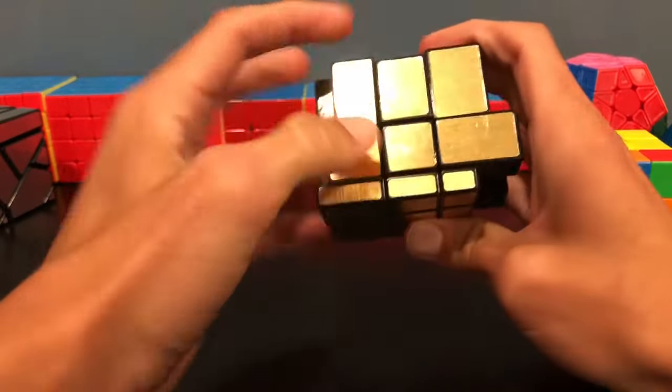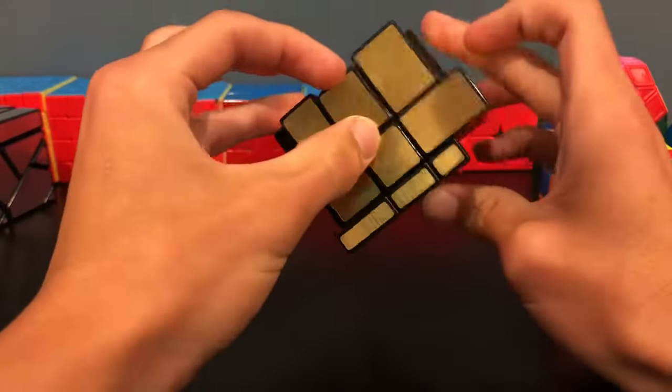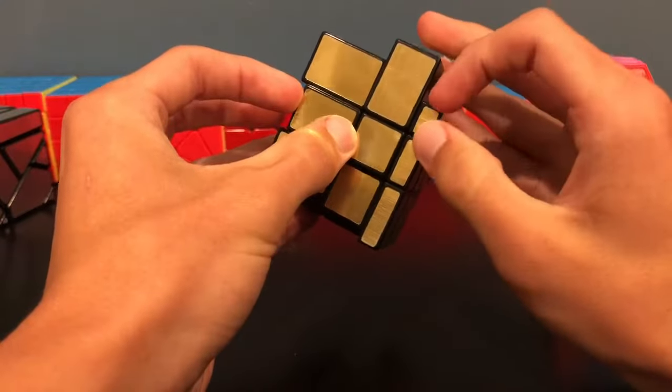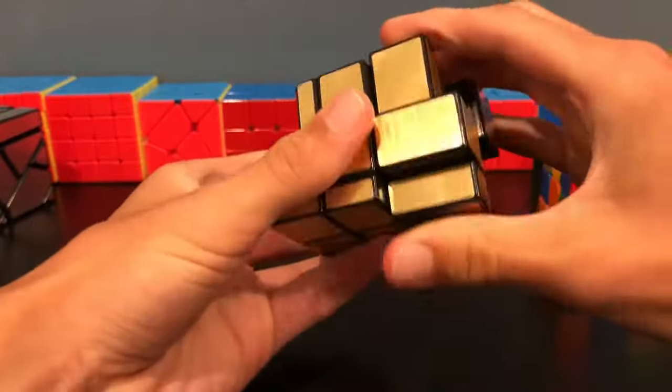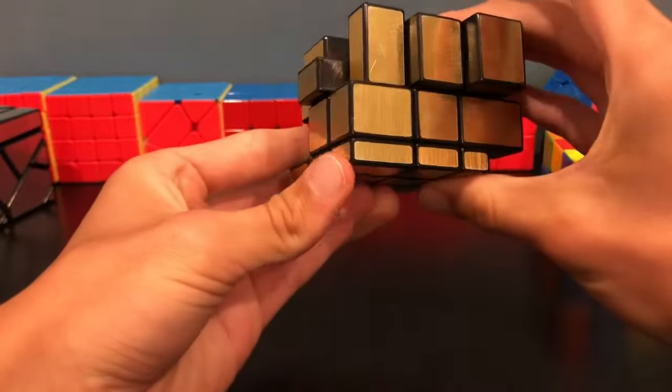So you can sort of just eyeball this. You can tell that since it's this thick, it's probably not going to go into this thin slot. Then you can just do your algorithm and then you're going to put it in.